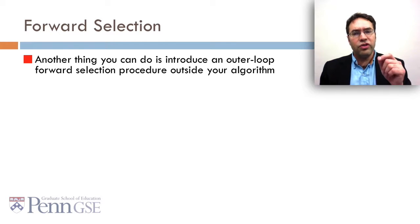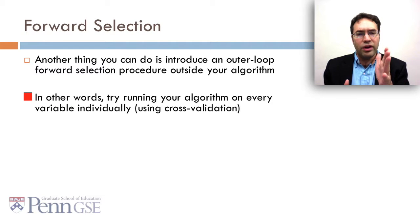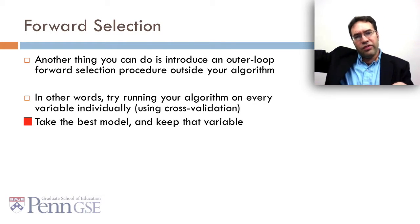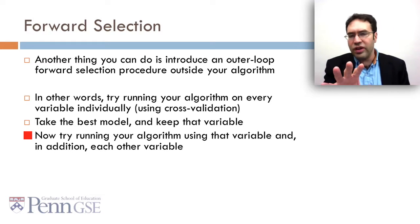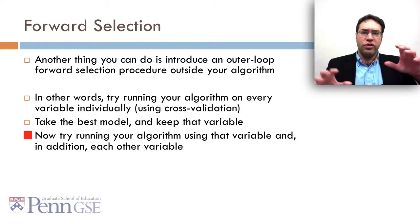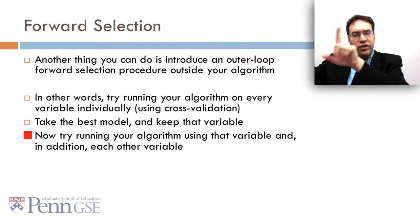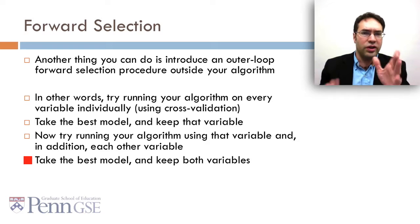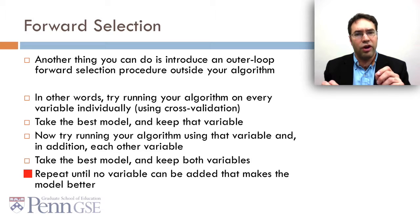Another thing you can do is introduce an outer loop forward selection procedure outside your algorithm. So in other words, try running your algorithm on every variable individually, again using cross-validation. Take the best model, keep that variable. That variable is in the save set, just like before with FCBF. Then try running your algorithm using that variable and in addition each other variable. So you take that save variable, you include that, and you include each of the other variables as well, one at a time. So you're going to run a lot of two variable models. Then you take the best model and you keep both those variables, and you repeat until there's no variable that's added that makes the model better under cross-validation.